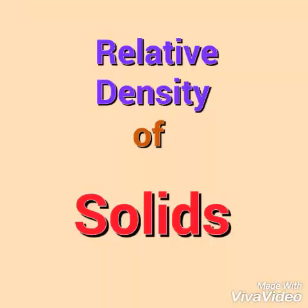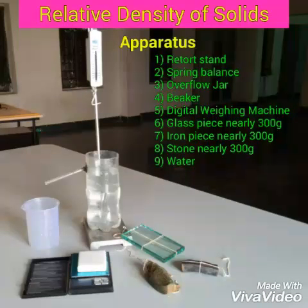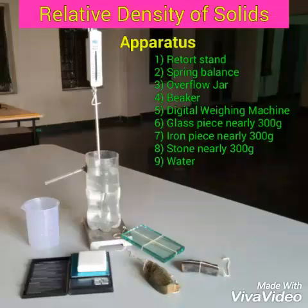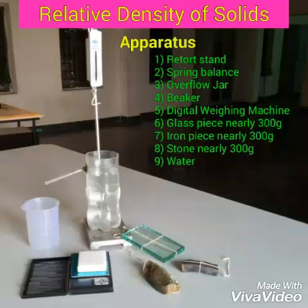Today, we will discuss the laboratory method to find the relative density of solids. The apparatus we need are: a retort stand, a spring balance, an overflow jar, a beaker, a digital weighing balance, a glass piece of nearly 300 grams, an iron piece of mass nearly 300 grams, a stone of mass nearly 300 grams, and water.